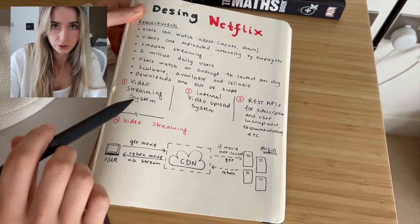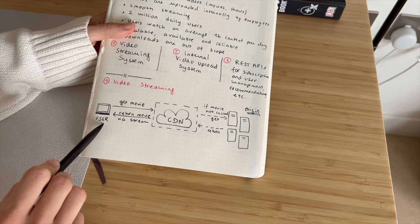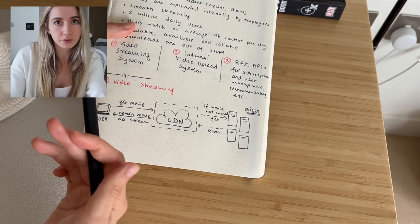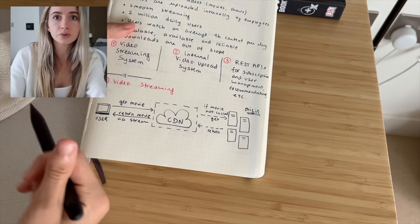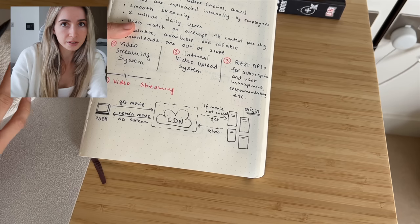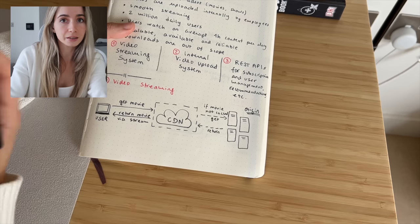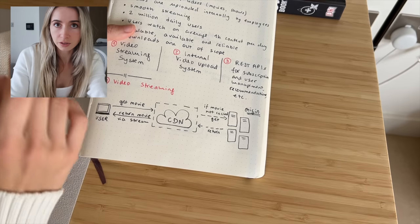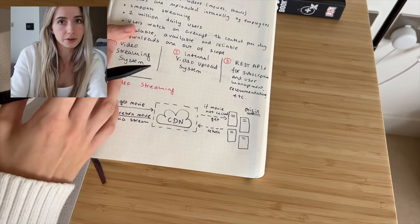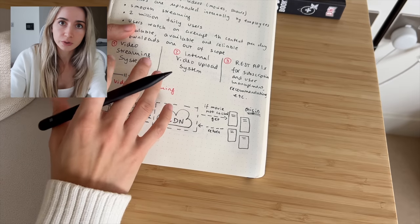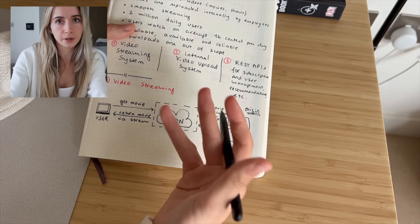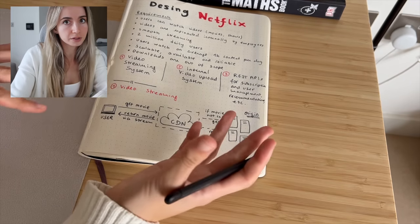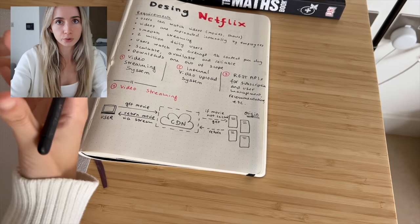Having 2 million daily users watching an average of one hour of content per day means we're streaming on average 2 million hours of content per day, and we need to do so in a very smooth and reliable way. When we're streaming content, it usually starts streaming immediately and we don't have to wait until the download is complete. When a video is downloaded, it is on our device and we are consuming it from the device. When the content is being transferred from a remote server in every instance, then that is streaming — we continuously receive data from a remote server. So one thing that is very important is to pick the right streaming protocol.